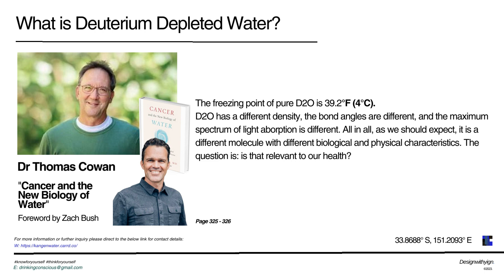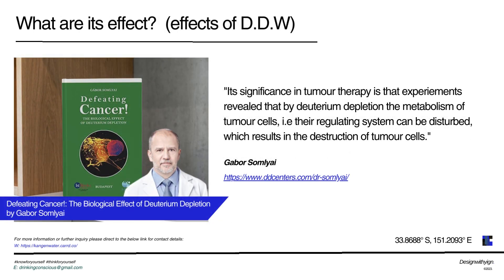What are the effects of deuterium depleted water? This is from a book called Defeating Cancer: The Biological Effect of Deuterium Depletion by Dr. Gabor Samja. He says: 'Experiments revealed that by deuterium depletion, the metabolism of tumor cells — their regulating system — can be disturbed, which results in the destruction of tumor cells.' Dr. Samja's website is shown on screen and will be in the description. He also released a new book in 2022: Deuterium Depletion: A New Way in Curing Cancer and Preserving Health.